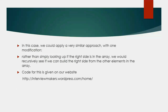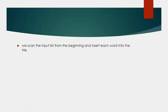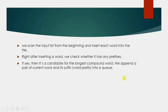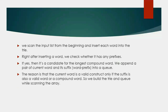Method 2 using a tree: we scan the input list from the beginning and insert each word into the tree. Right after inserting a word, we check whether it has any prefixes. If yes, then it's a candidate for the longest compound word. We append a pair of the current word and its suffix into a queue, because the current word is valid only if the suffix is also a valid word or compound word.